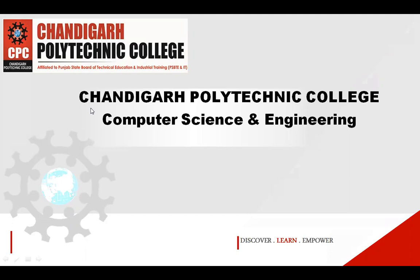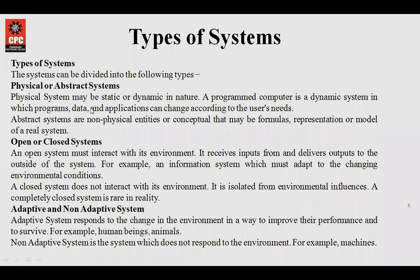Starting with number one: physical or abstract systems. A physical system is the one that consists of tangible entities. Tangible are the ones that we could see, feel and touch, and that may be static or dynamic in nature.